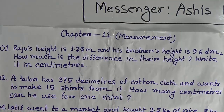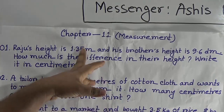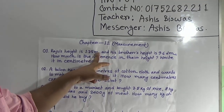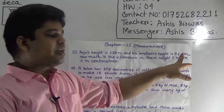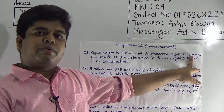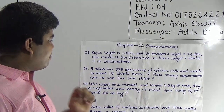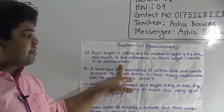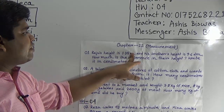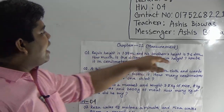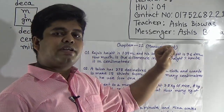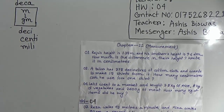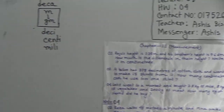So how can we subtract? First, we convert the units into one unit. Since the question asks for the answer in centimeters, we convert 1.35 meters into centimeters and 9.6 decimeters into centimeters. So write Question number 1, given that Raju's height is 1.35 meters.